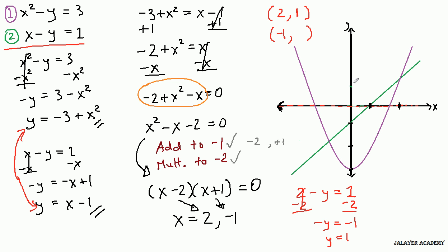Now let's do the same thing for the other x value. Negative 1. Let's plug in to the second equation. So we get negative 1 minus y equals 1. We'll do plus 1, plus 1, and we get negative y equals 2. So that means y equals negative 2. And we have our y coordinate here.